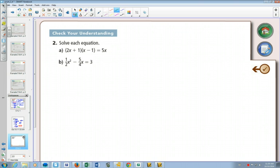So we have to first expand this, FOIL the first ones. We get 2x² - 2x + x - 1 = 5x. Combine like terms and bring everything over to one side. So I'll subtract 5x on both sides.